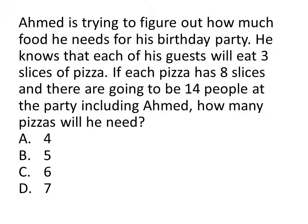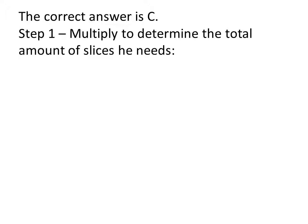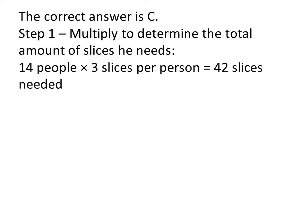Moving on now to our answer. The correct answer is C, 6. Step 1: multiply in order to determine the total amount of slices that he needs. We can see from the question there are 14 people at the party, and there are to be 3 slices per person. Multiplying 14 by 3, we get 42 slices needed in total.